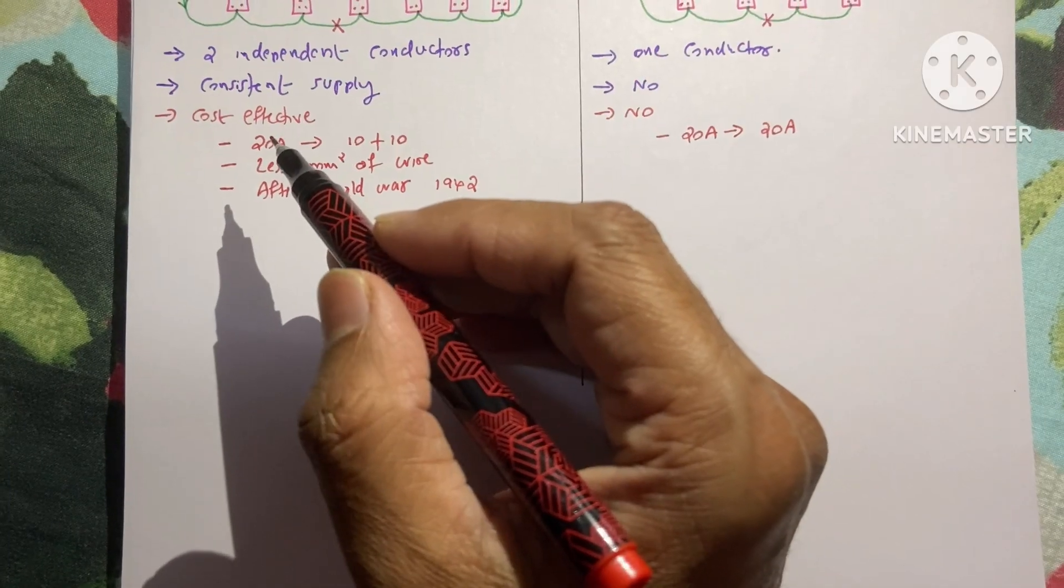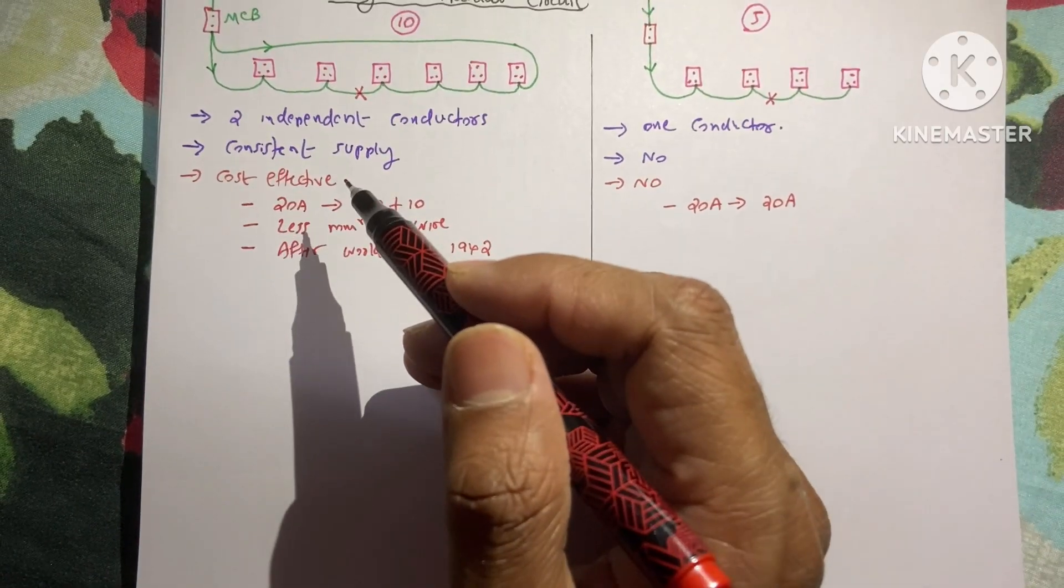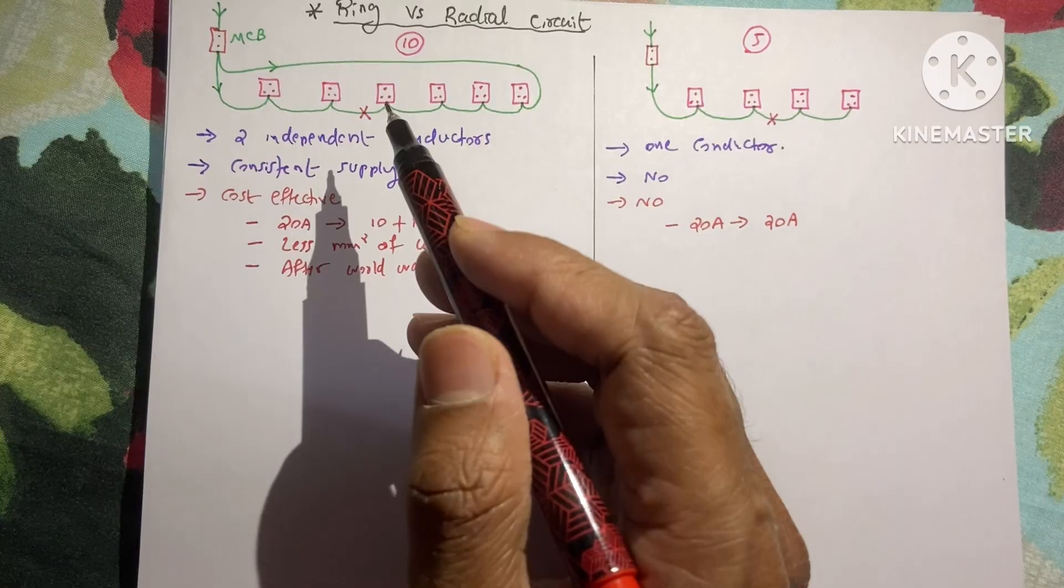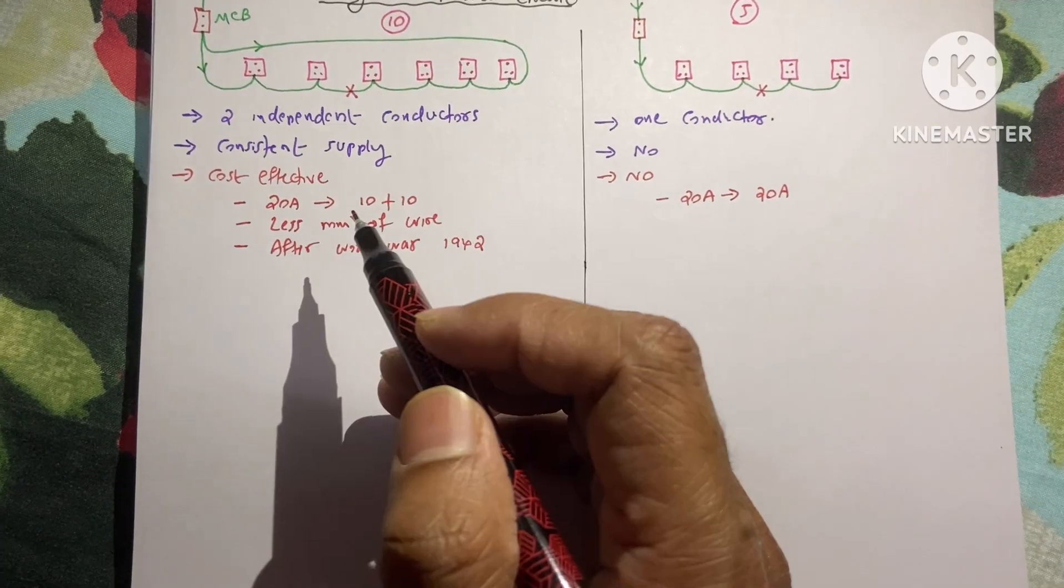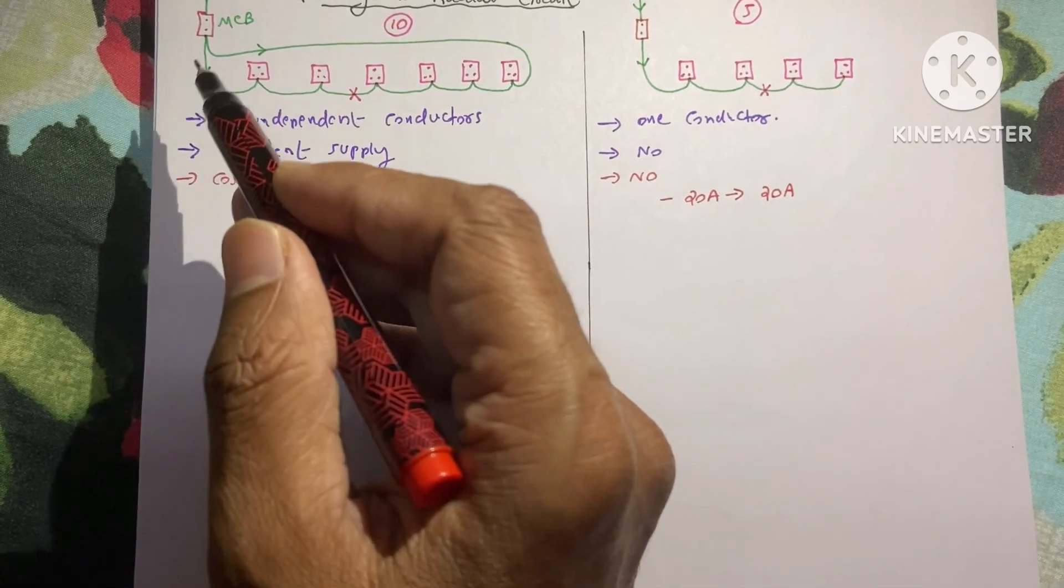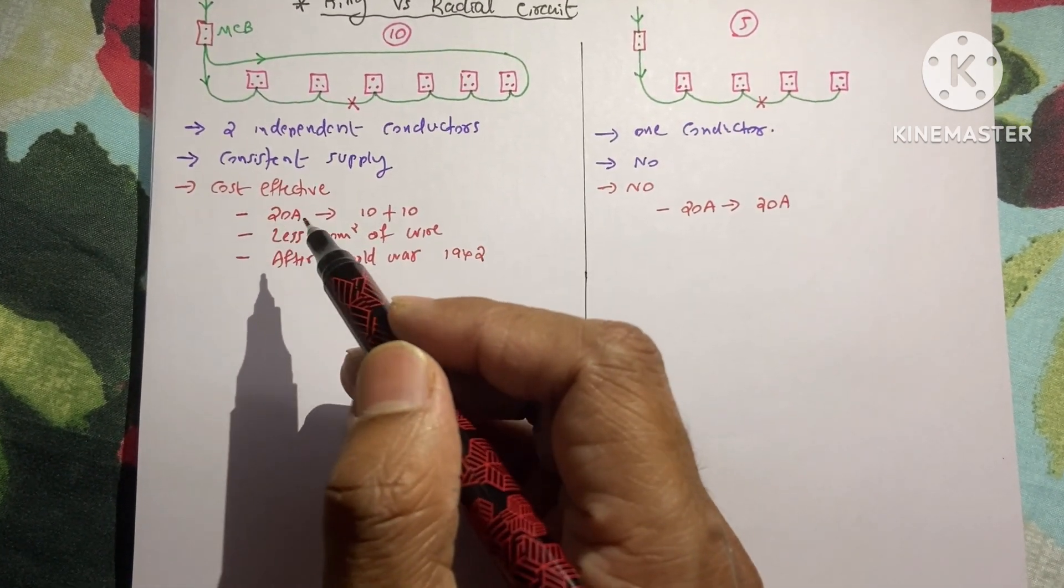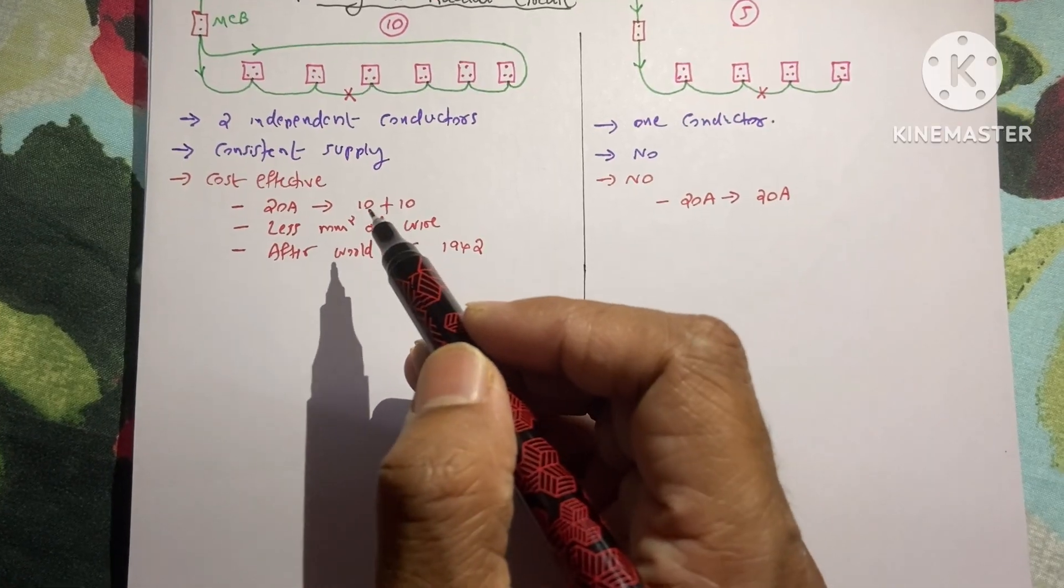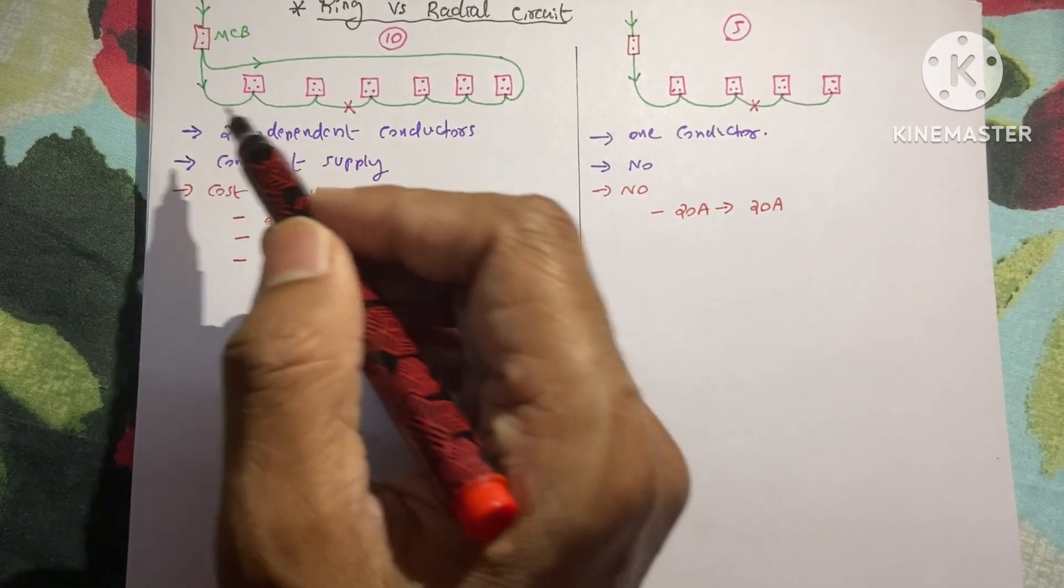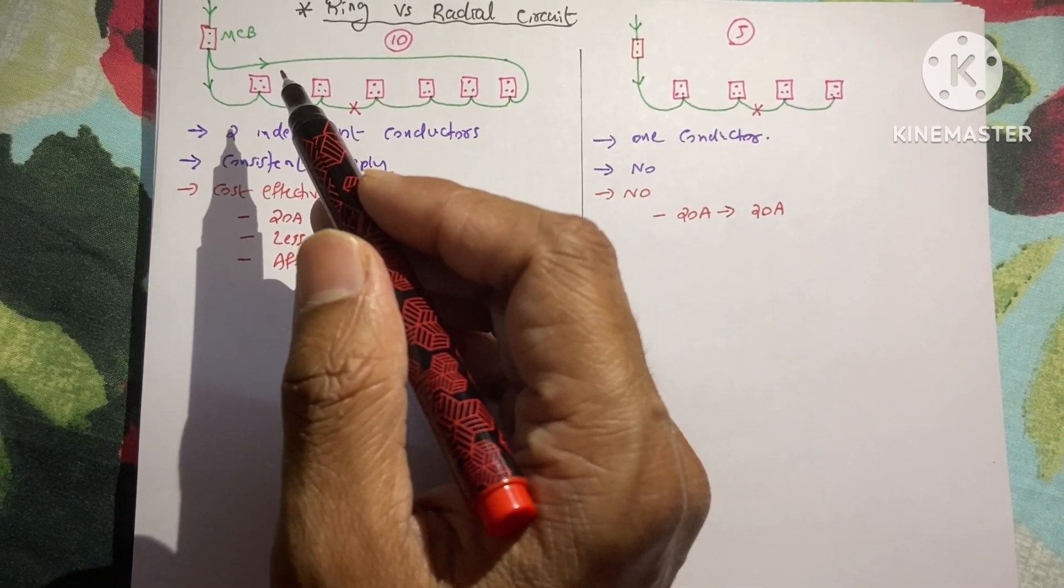Next, about the cost effectiveness. In ring circuit it is very cost effective. If these sockets require 20 Ampere of current, then half of the 20 Ampere would pass through this way and half pass through this way. That means 10 Ampere would pass through this way and 10 Ampere through this way. It means we require less mm square of wire.